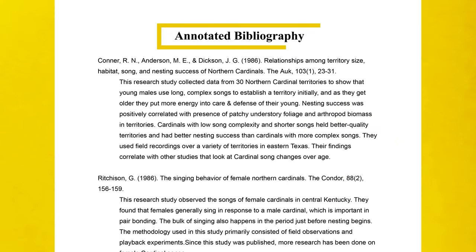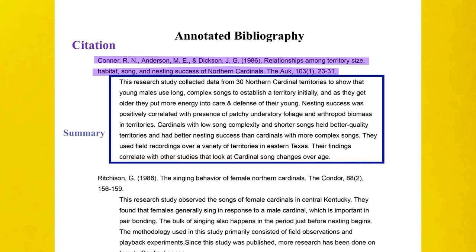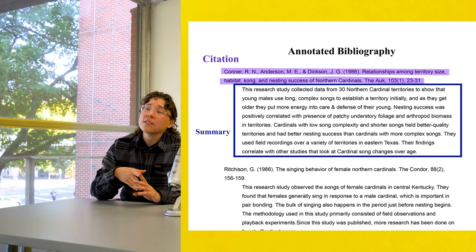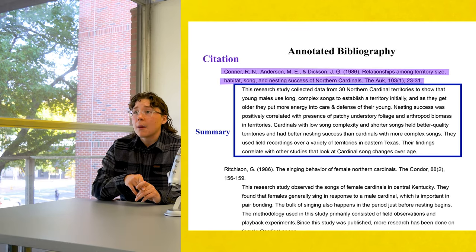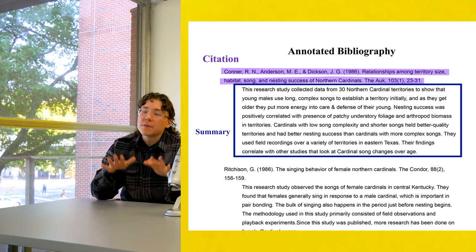There are multiple strategies that can help you synthesize the literature that you found. One way to get started is with an annotated bibliography, which is a list of citations accompanied by a descriptive and critical summary. The annotations summarize each source, assess its usefulness, and reflect on its benefit to your topic. An annotated bibliography can help you identify themes and serve as a foundation to your lit review. However, it is important to move beyond the summary because a lit review synthesizes the information presented in the sources.